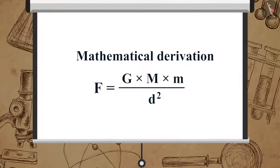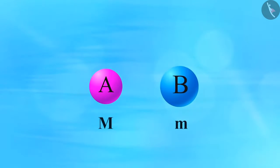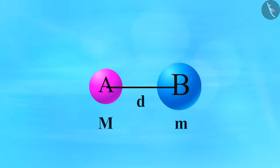Now let's see how we can derive the mathematical representation of universal law of gravitation. Let us consider two objects A and B with masses M and m respectively and the distance between them is d. Let the force of attraction between A and B be F.